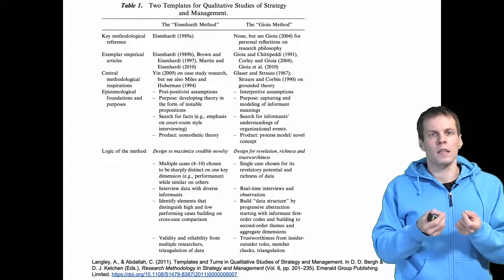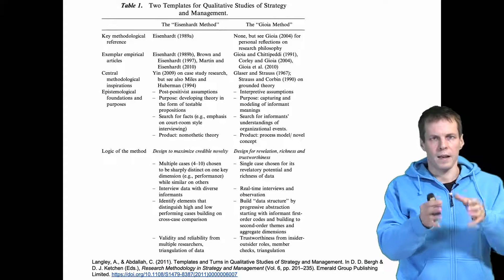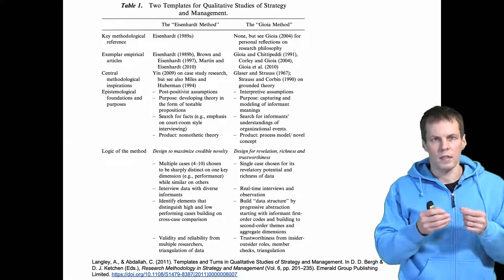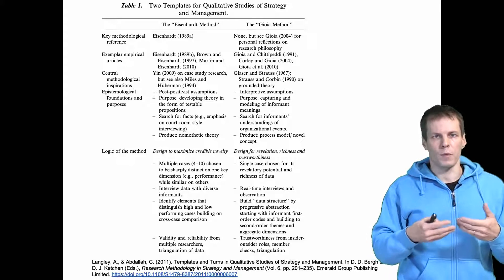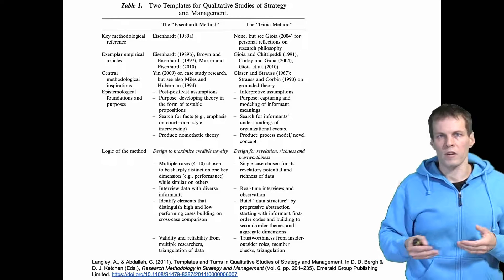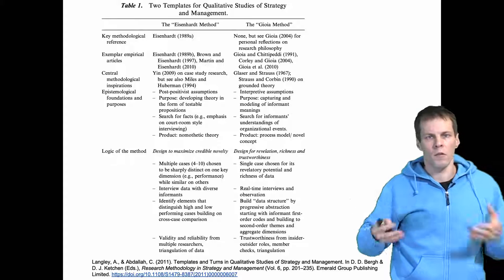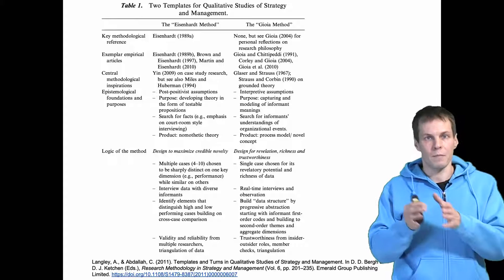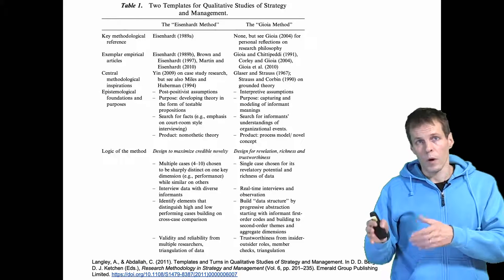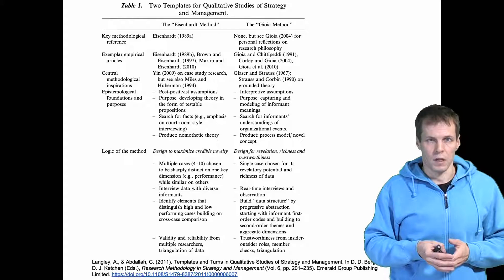The idea here is that the method is more about facts and events that people describe instead of being about how people interpret those descriptions. So whereas the Gioia method is about understanding how people interpret the events around them, in the Eisenhardt method we are interested in the events themselves and the way people interpret those events can produce bias to our analysis results.